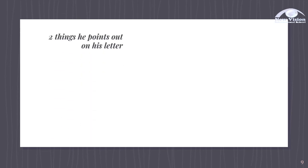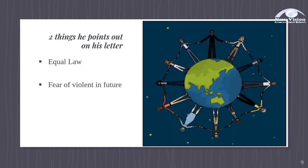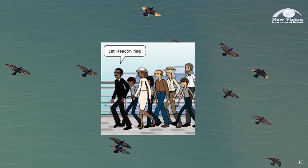Let's go now to the content of the letter. Martin Luther King stresses two things in his letter: first is Equal Law, and second is fear of violence in the future. Martin's main message in his letter is Freedom — he stresses that let freedom ring.